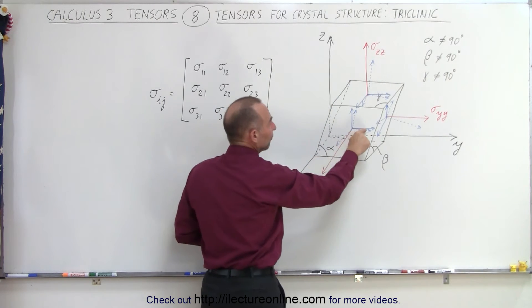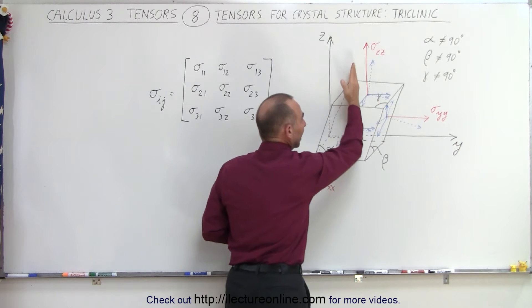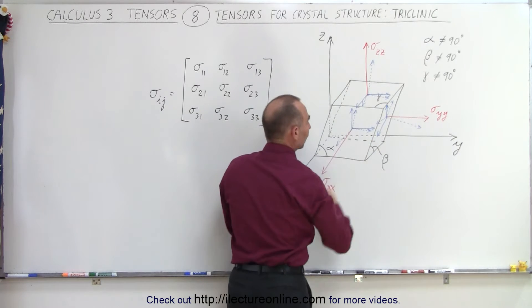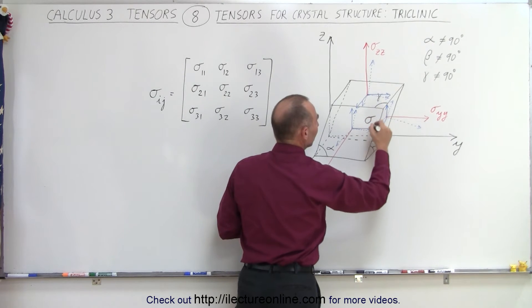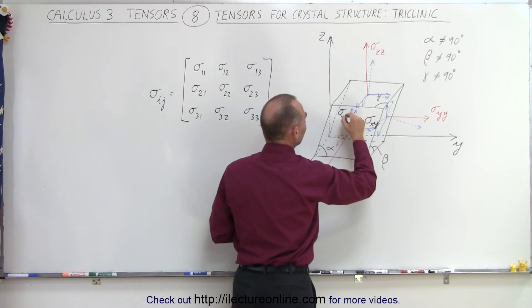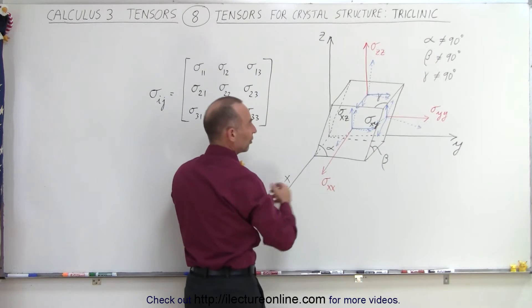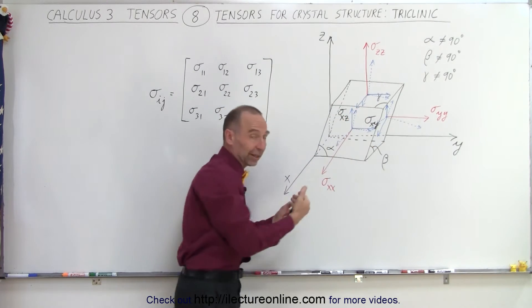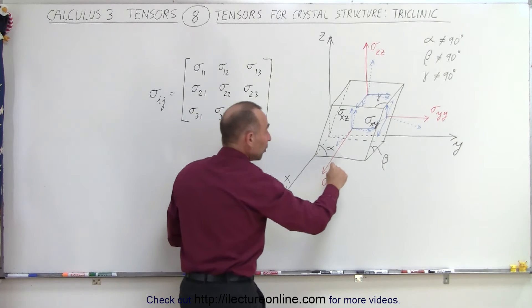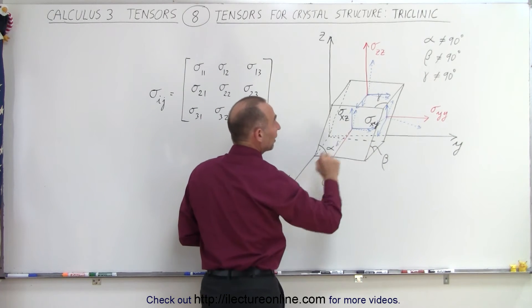That includes the component parallel to the x-axis, the component parallel to the y-axis, and the component parallel to the z-axis. For example, this one right here would be represented as sigma x-y and sigma x-z. In other words, any vector that emanates from this plane — for example the vector perpendicular to the plane — must be the sum of these three vectors.